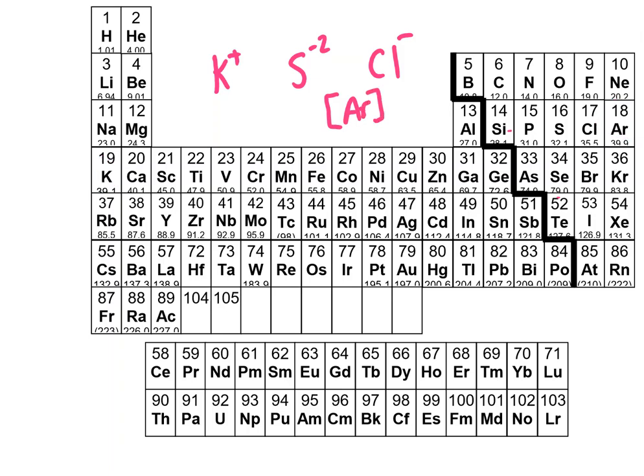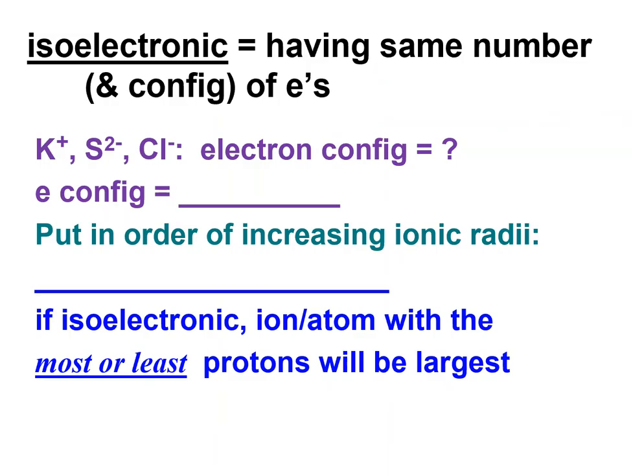What makes them different is the number of protons. So you might want to think about what the number of protons is going to do to their size. Their electron configuration is argon. Again what's different about them is the number of protons. So if we look on the periodic table which one had the most protons? It was potassium.